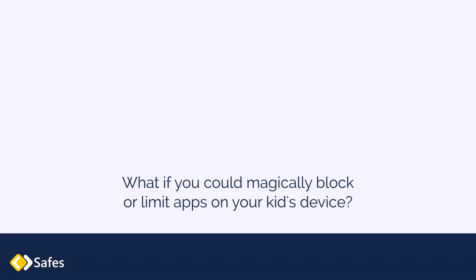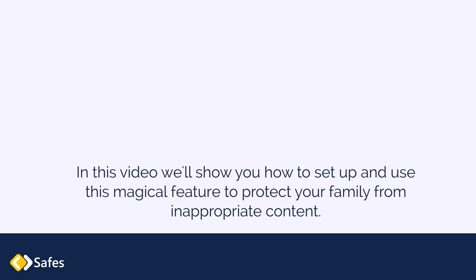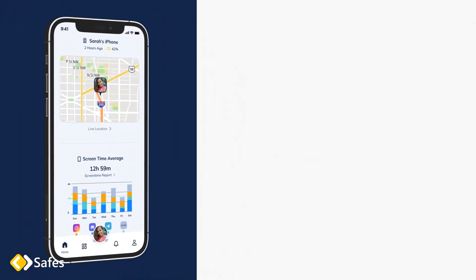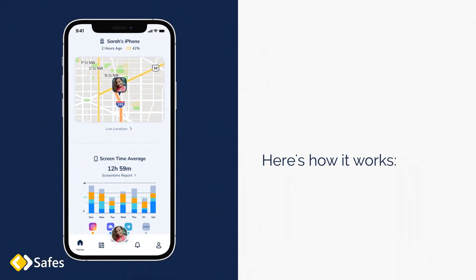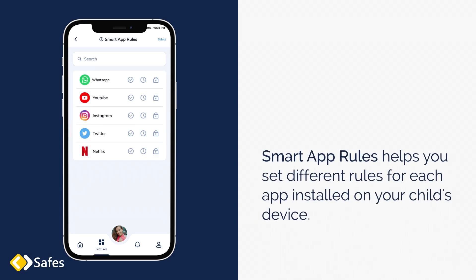What if you could magically block or limit apps on your kid's device? You can do this using our Smart App Rules feature. In this video, we'll show you how to set up and use this feature to protect your family from inappropriate content. Here's how it works. You can find Smart App Rules on the Features tab in the app. Smart App Rules helps you set different rules for each app installed on your child's device.